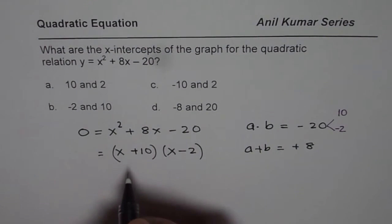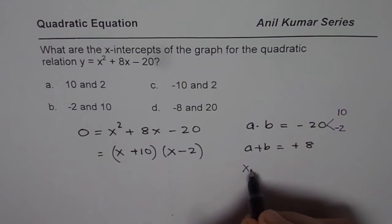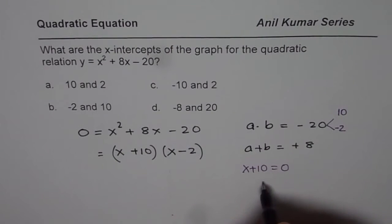For getting 0, we have to equate them to 0. That is to say, we have to find that x + 10 = 0. That gives you x = -10. Do you get the point?